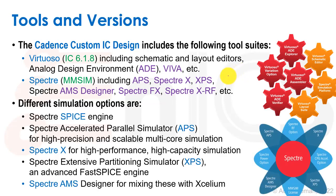There are different simulation options. There's the Spectre, which is just the basic SPICE engine — I would call it the old SPICE engine — because basically it's been replaced by APS, the Spectre Accelerated Parallel Simulator. I believe there are differences in pricing and licensing between these things. As an academic, we don't pay industrial prices, but there may be a reason to use one over the other because of lack of licenses.